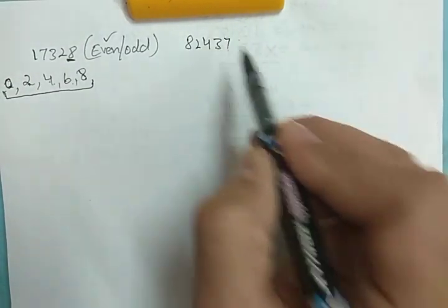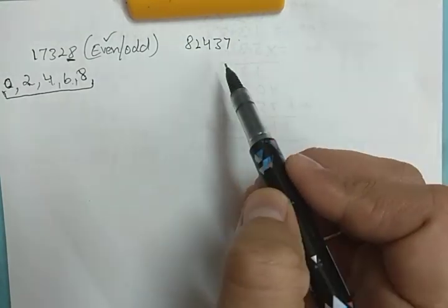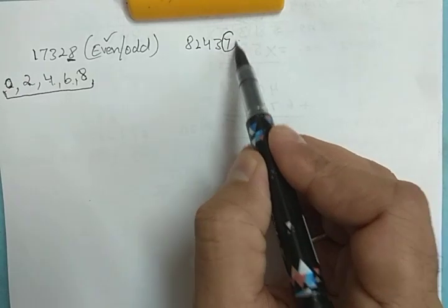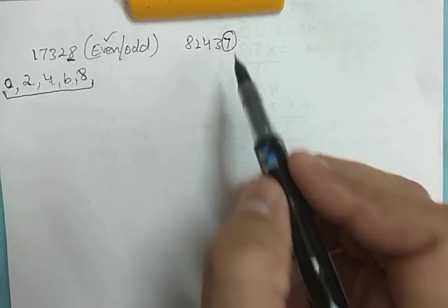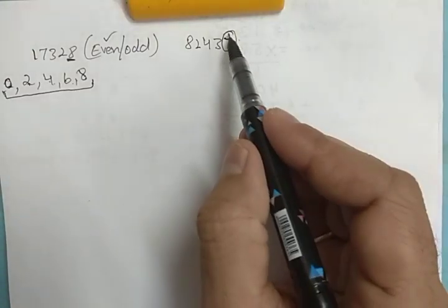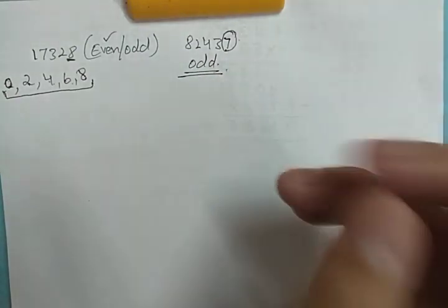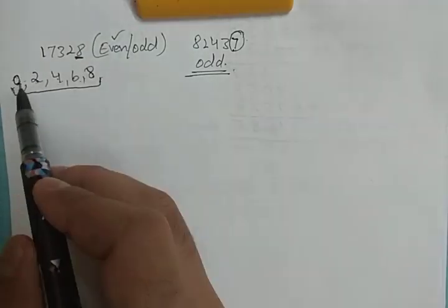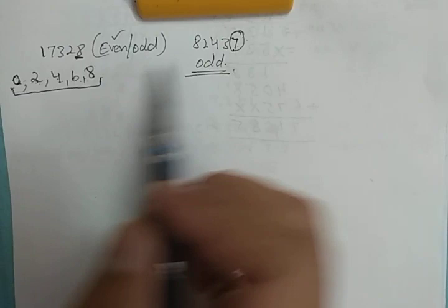Let's take another example: 82437. Is it even or odd? Just check the digit at the ones place — it is 7. Is 7 in the table of 2? 2 × 3 = 6 and 2 × 4 = 8, so 7 is not a multiple of 2. Therefore 82437 is an odd number.